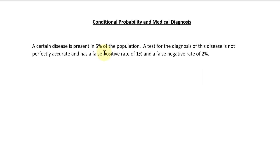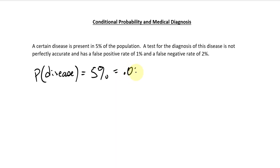The first thing I'll do is highlight that there is 5% of the population with the disease. I'll write that as the probability of the disease equals 0.05, or as a fraction 5 out of 100. So out of every 100 people, there would be 5 people that have the disease on average. That's the way you interpret that probability — 5 out of every 100 on average.